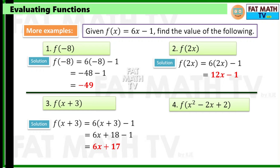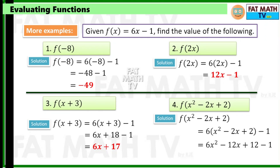For f of x squared minus 2x plus 2, replace x with x squared minus 2x plus 2. That gives 6 times x squared minus 2x plus 2 minus 1. Distributing: 6x squared minus 12x plus 12, then minus 1. So 12 minus 1 is 11, giving f of x squared minus 2x plus 2 equals 6x squared minus 12x plus 11.